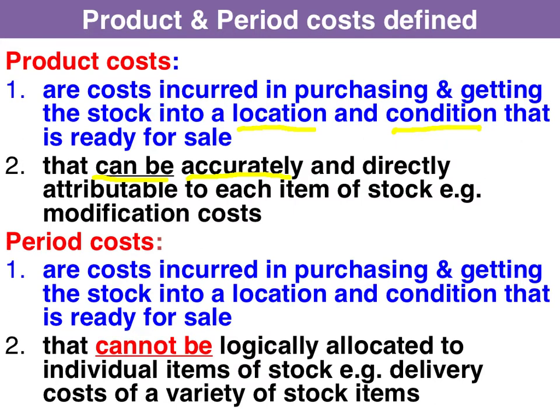Period costs are also incurred in getting the stock into a location and condition ready for sale, but they cannot be logically allocated to an individual stock item. For instance, freight on a variety of stock items.